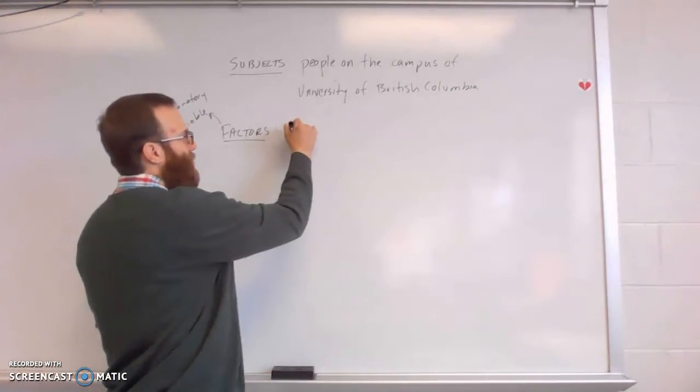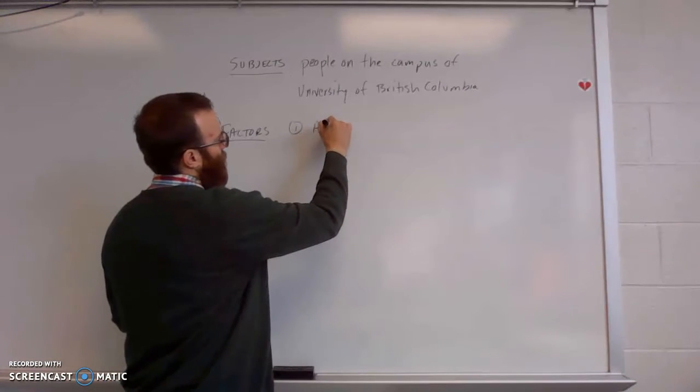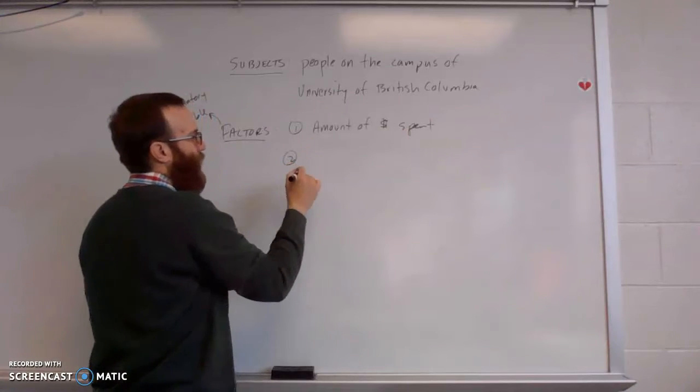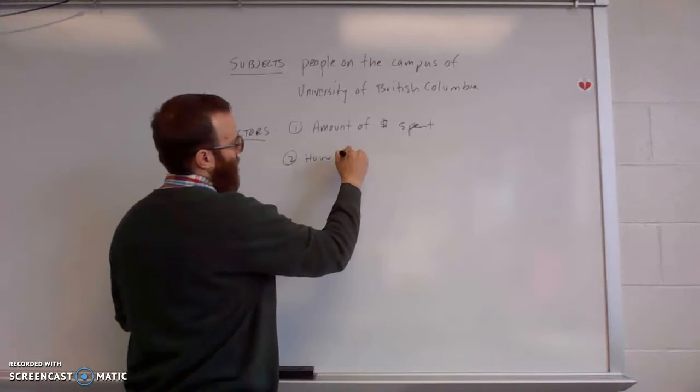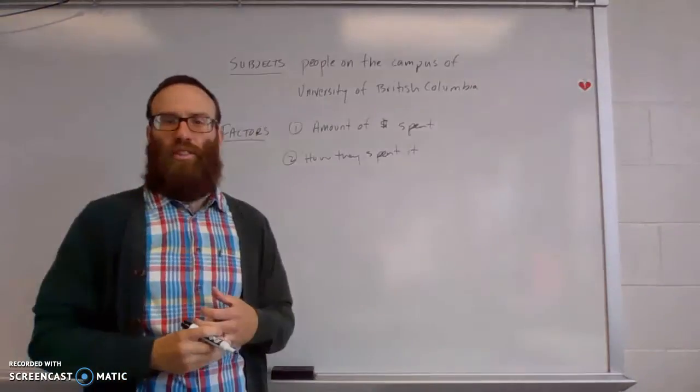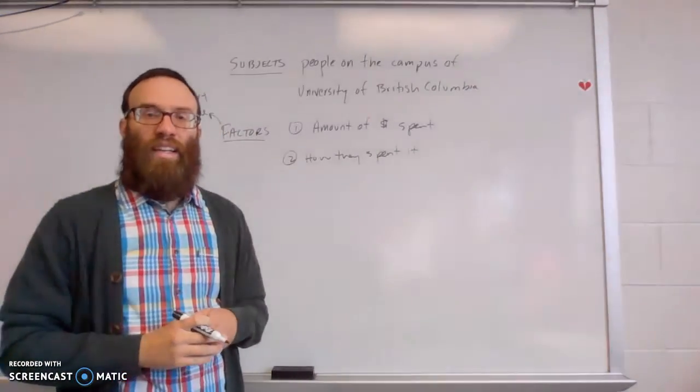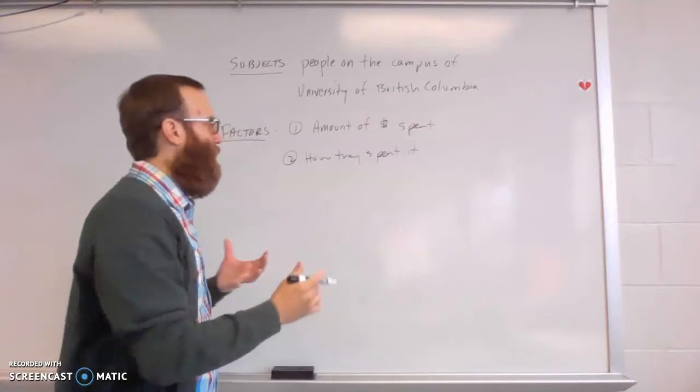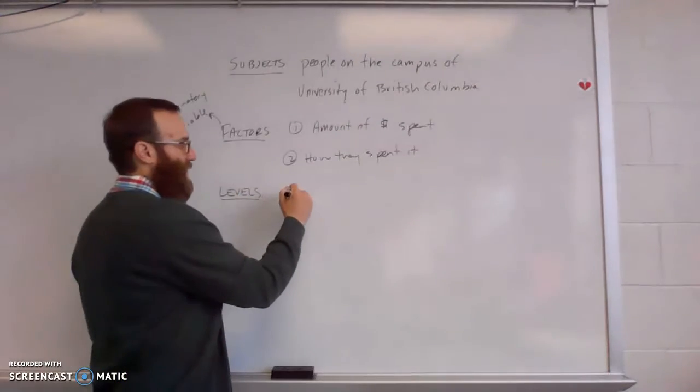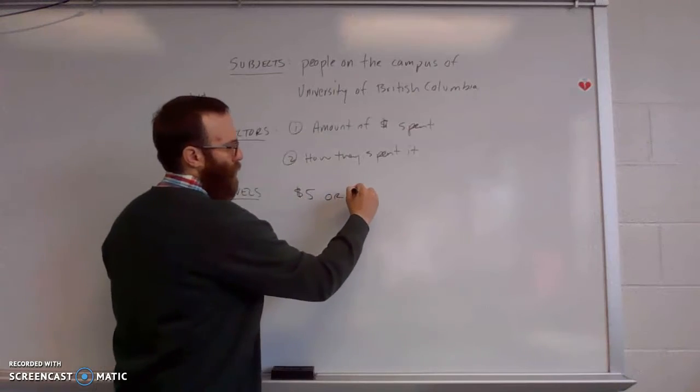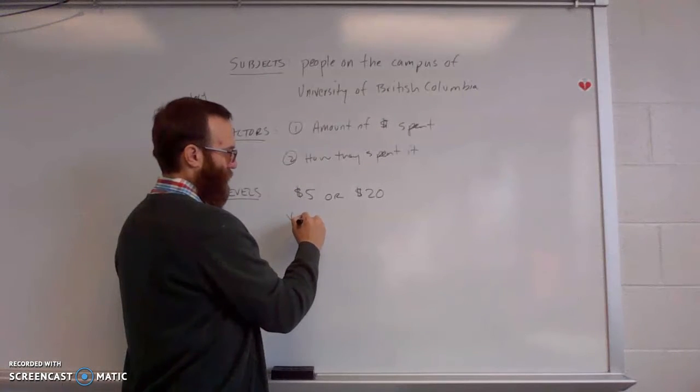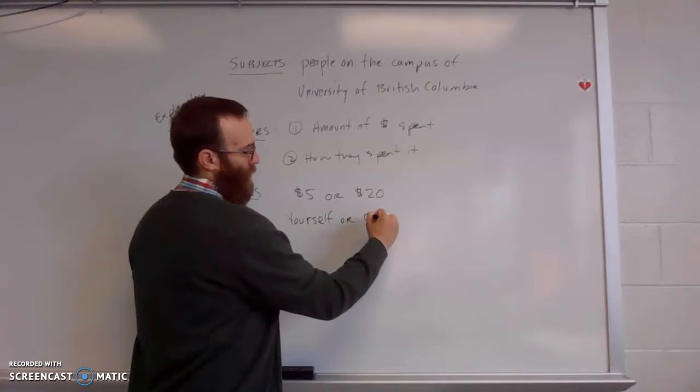And really in this way, there are two. There was the amount of money spent and there was how he spent it. All right. I'm going to apologize. I'm getting a little sloppy with the handwriting here, but hopefully it still makes sense. Now, the cool thing within this is it's a variable. So there are different levels of that. Within the amount of money spent, it was either $5 or $20. And within how they spent it, it was on yourself or on others.